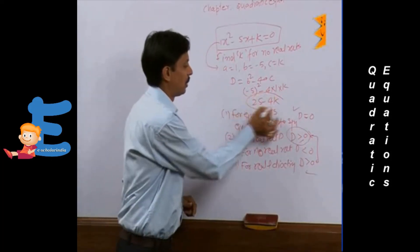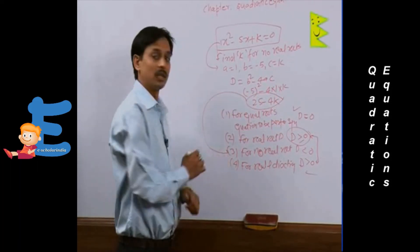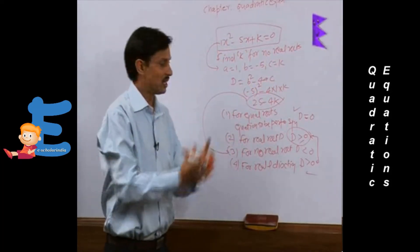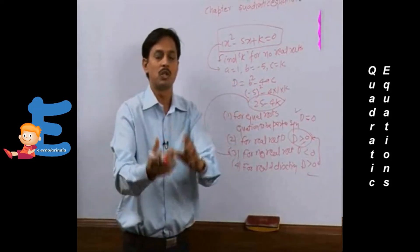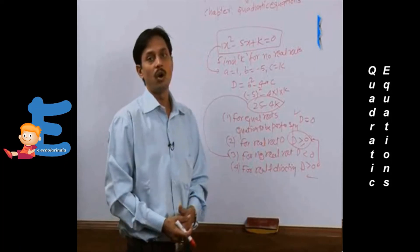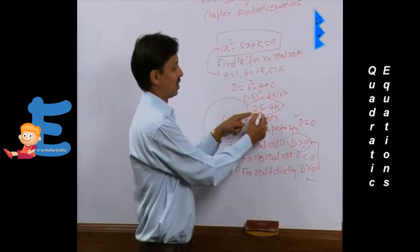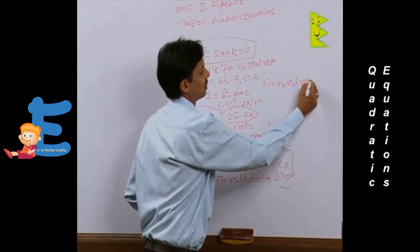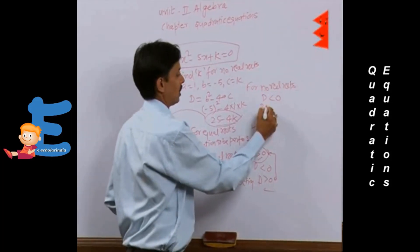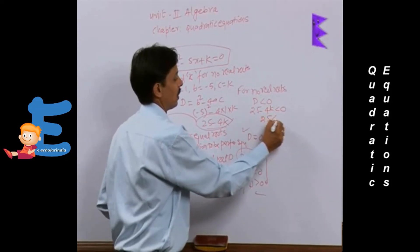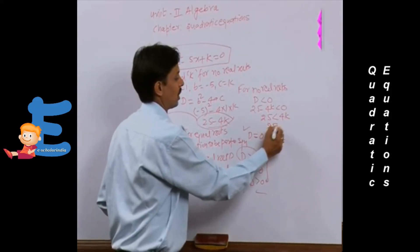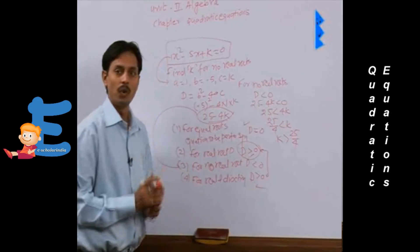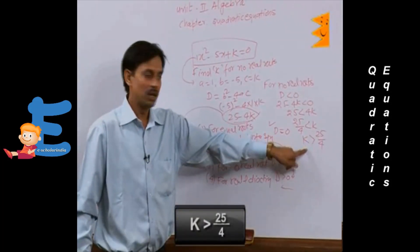We connect the discriminant 25 - 4k with the third condition: for no real roots, D < 0. So 25 - 4k < 0, which gives 25 < 4k, therefore k > 25/4. This is the answer to this question.